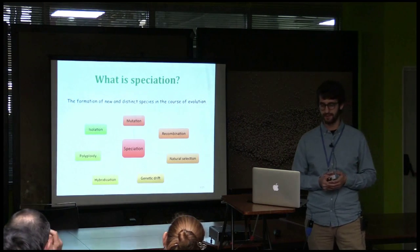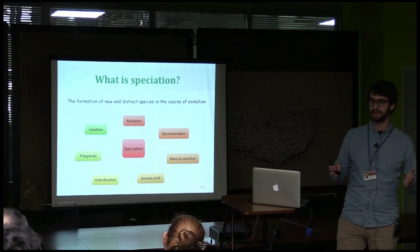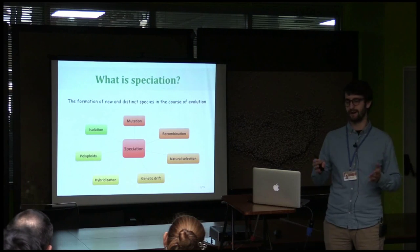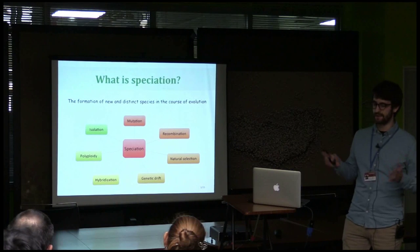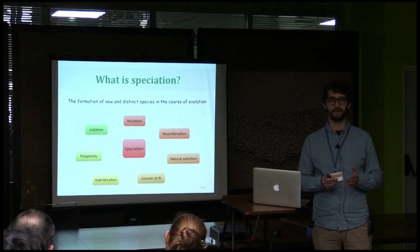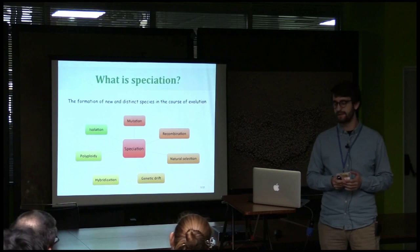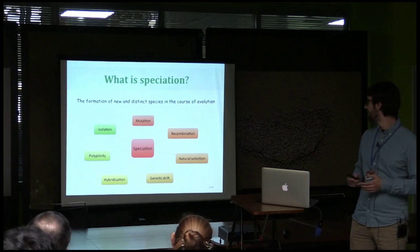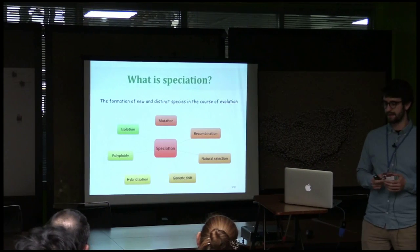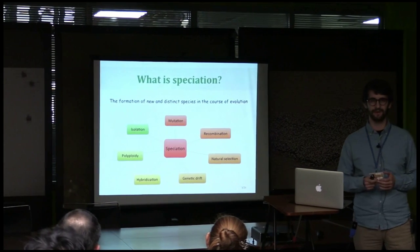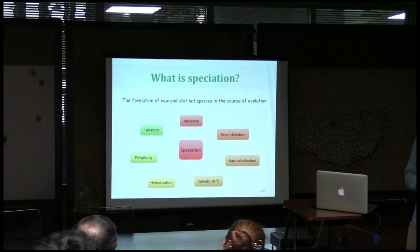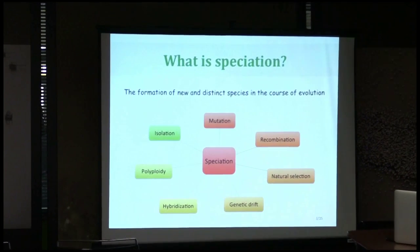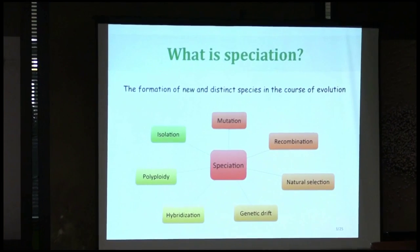What's speciation? Speciation could be a very complicated topic, but I'm just going to say that it's the formation of a new and distinct species in the course of evolution. These are some of the mechanisms — I think these are the main ones that can produce speciation in natural populations.